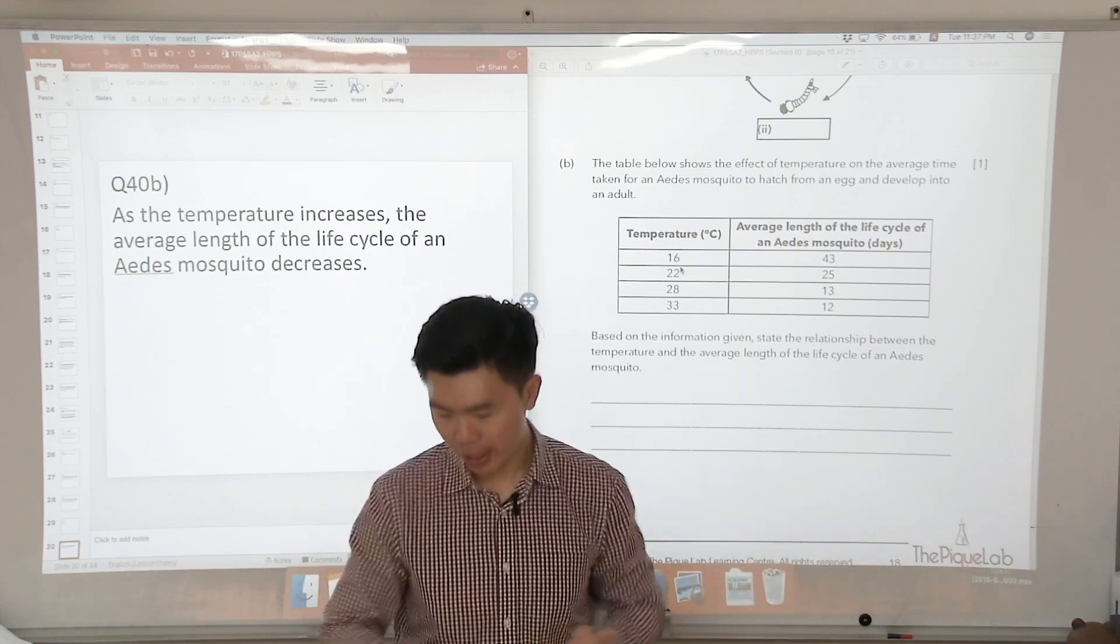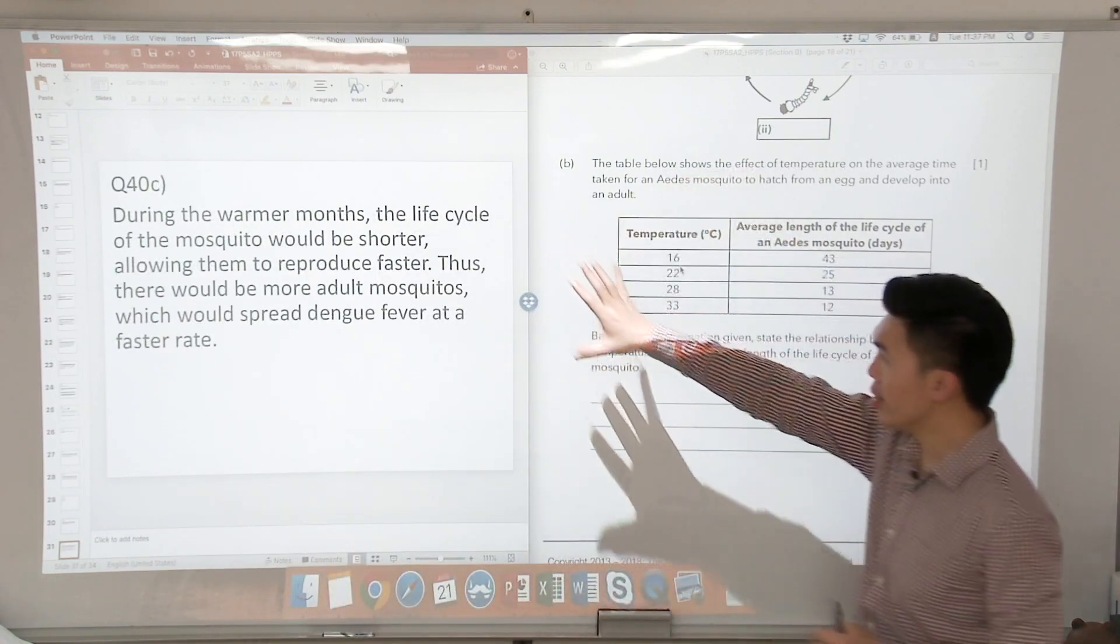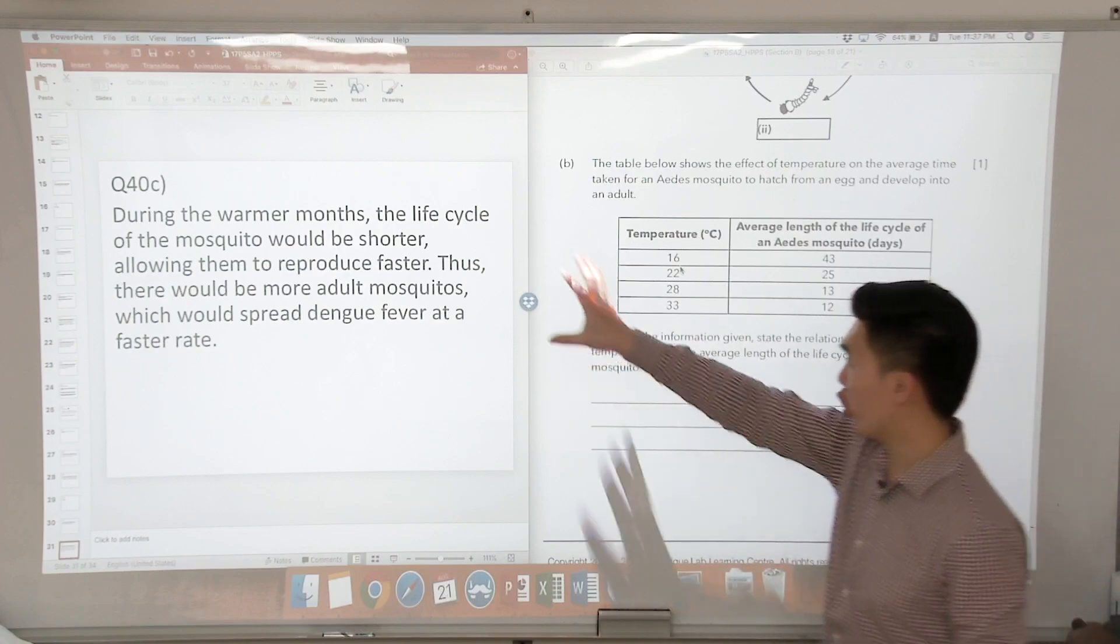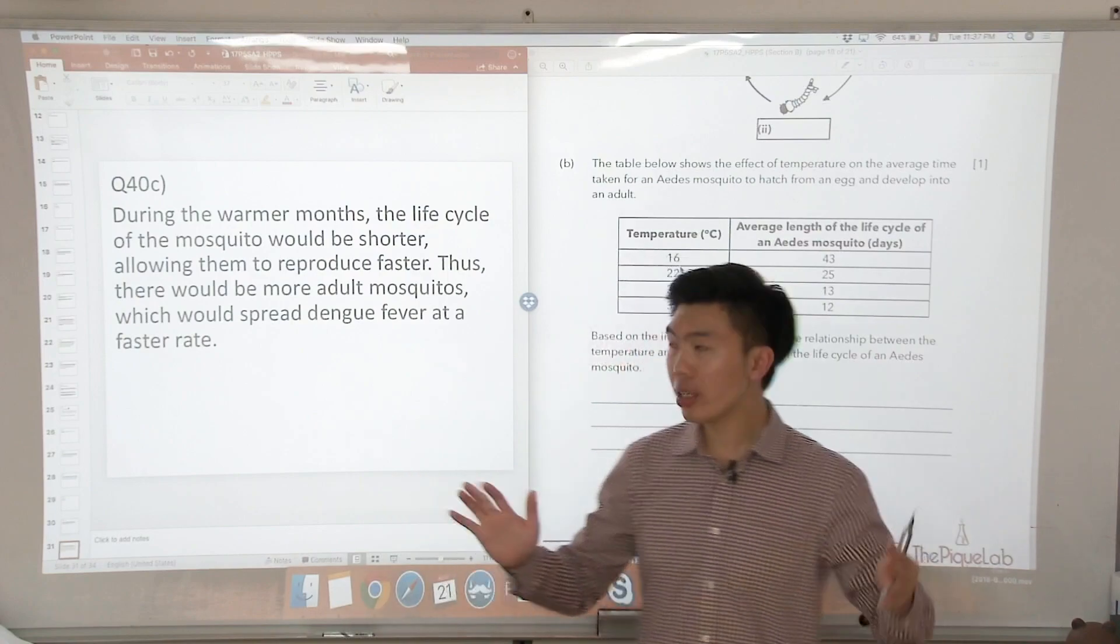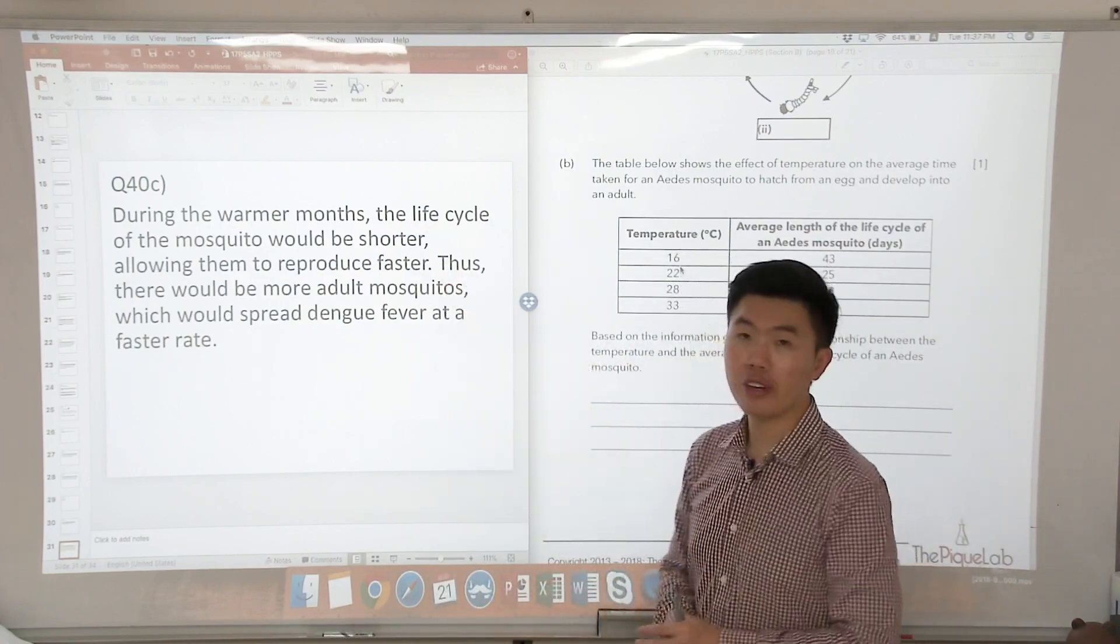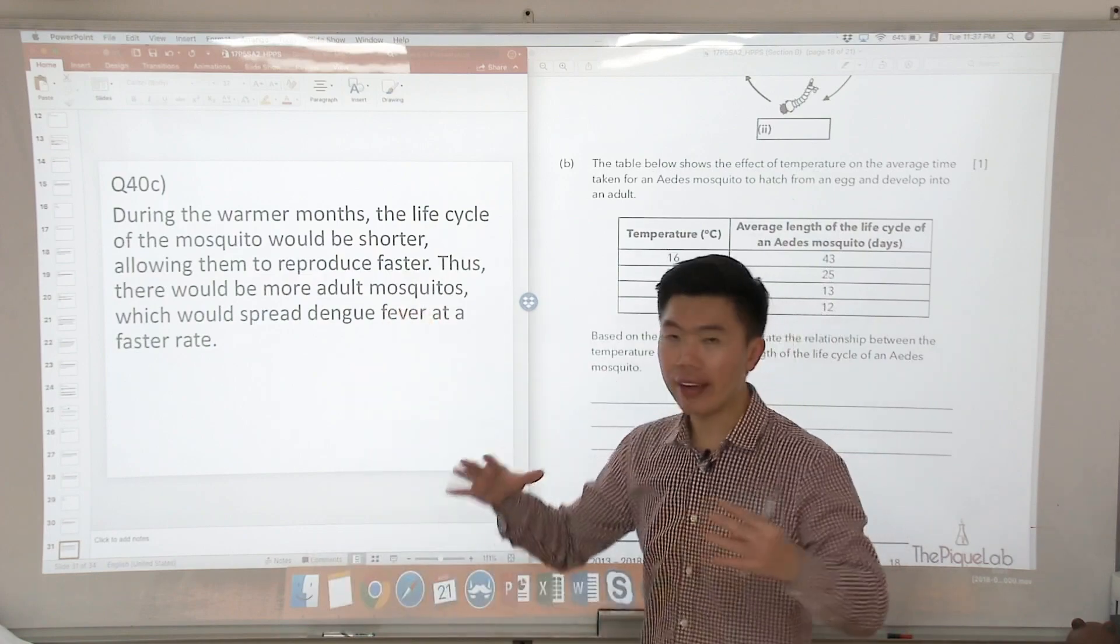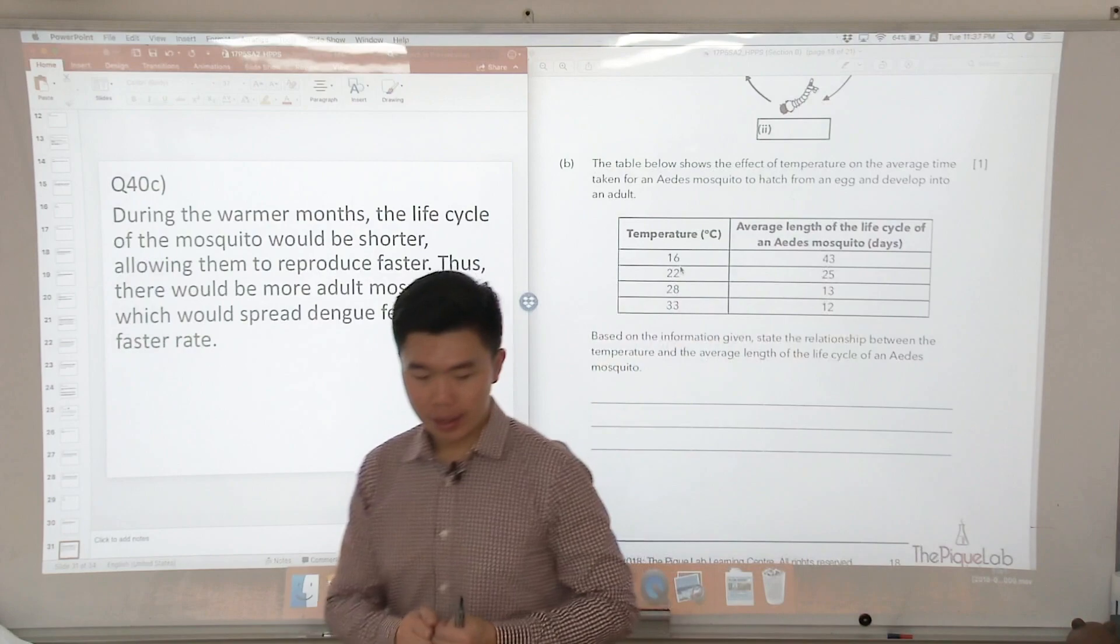There will be likely to have more mosquitoes in the environment. Okay, so how should we answer? We say during the warmer months, the life cycle of the mosquito will be shorter, so they will reproduce faster, and thus there will be a larger number of adult mosquitoes which would spread the dengue virus or the dengue fever virus at a faster rate. Is that clear?